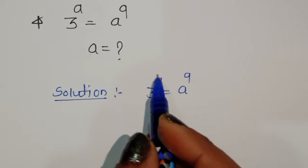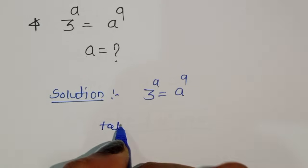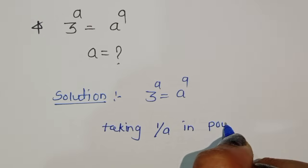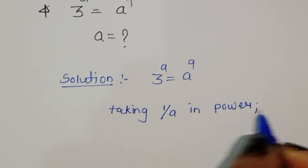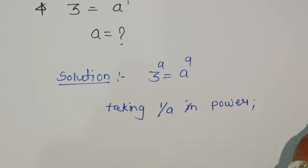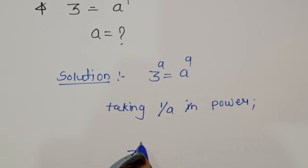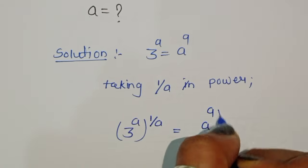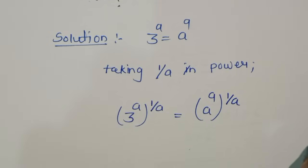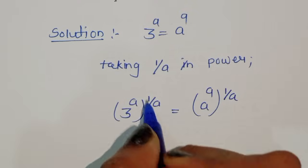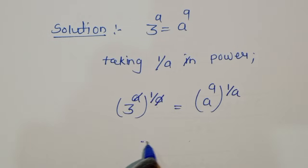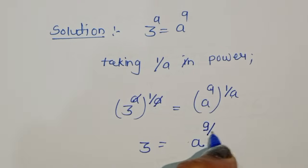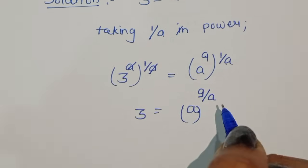Taking 1 upon a as the power on both sides. So we will get 3 power (a power 1 upon a) is equal to a power (9 power 1 upon a). Here, 3 power (a power 1 upon a) — we can cancel this a — so 3 is equal to a power 9 upon a.